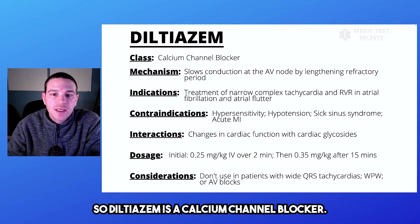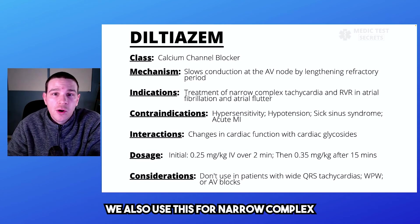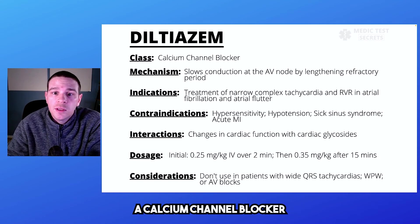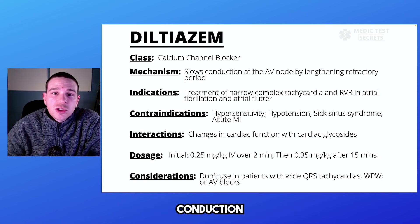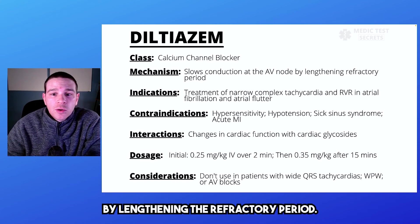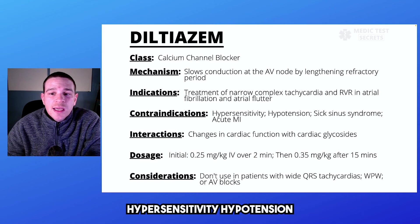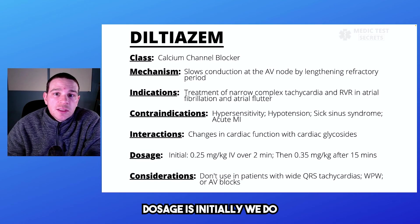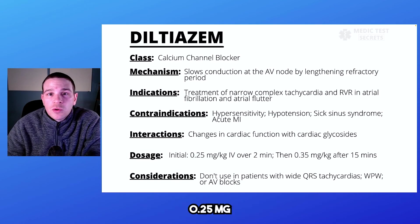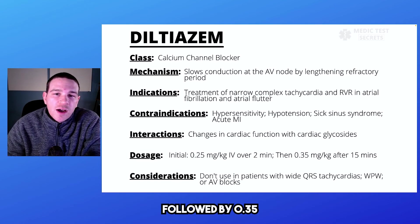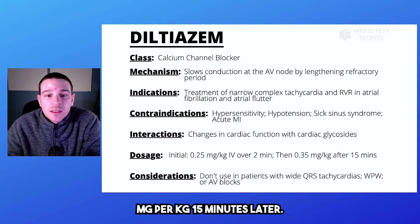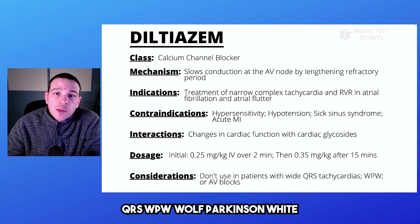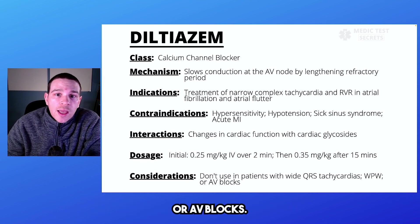Diltiazem is a calcium channel blocker. We also use this for narrow complex tachycardias, and it's primarily used for afib or a flutter. A calcium channel blocker slows conduction at the AV node by lengthening the refractory period. Contraindications include hypersensitivity, hypotension, sick sinus syndrome, and acute MI. The dosage is initially 0.25 milligrams per kilogram, followed by 0.35 milligrams per kilogram 15 minutes later. We don't want to use this with patients who have a wide QRS, WPW, or AV blocks.